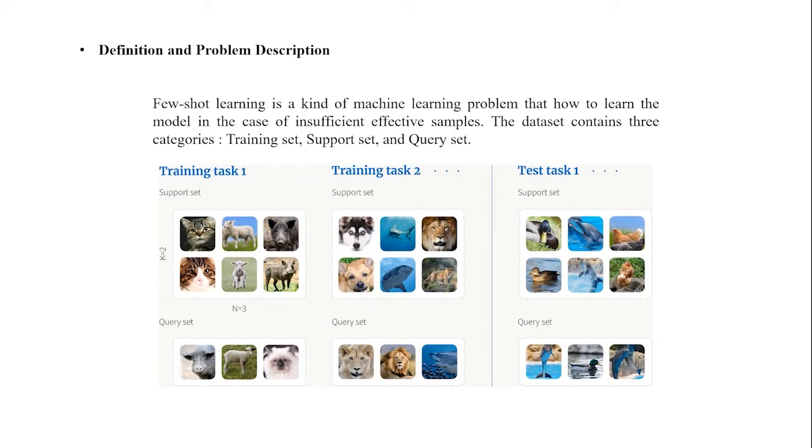How to define few-shot learning? Few-shot learning is a kind of machine learning problem that how to learn the model in the case of insufficient effective samples. The dataset contains three categories: training set, support set, and query set. There are large-scale labeled data in the training set, containing numerous different classes and many samples in each class, which is used to train the models.